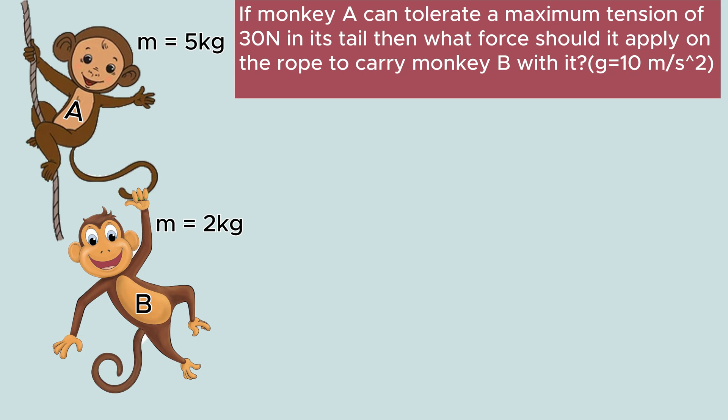We can take the value of small g, that is acceleration due to gravity, equals 10 meters per second square. In order to solve this problem, we require to know how to apply Newton's second law of motion. Our first step will be to decide the system. For the first case, our system will be monkey A.